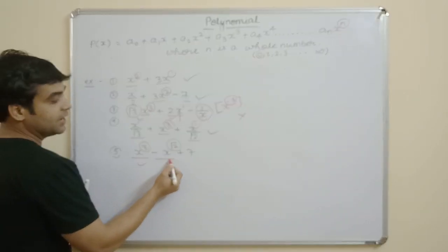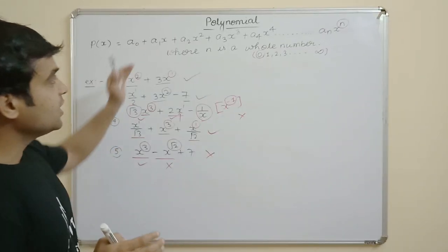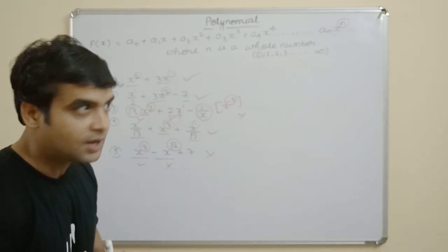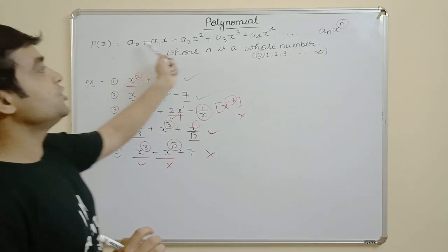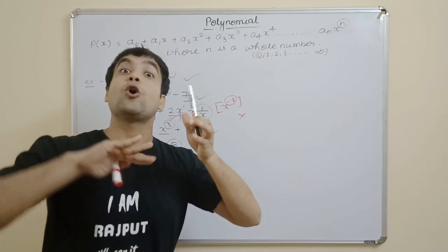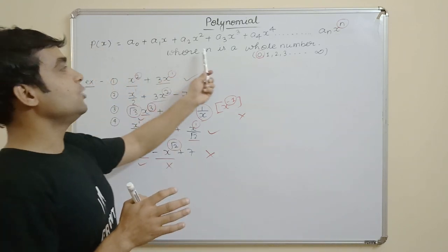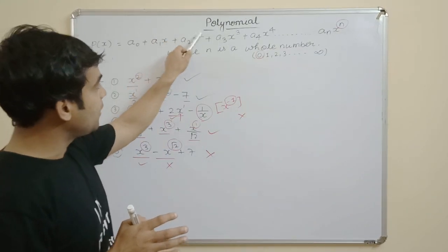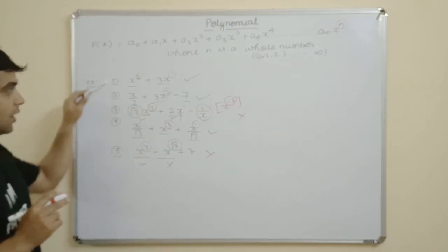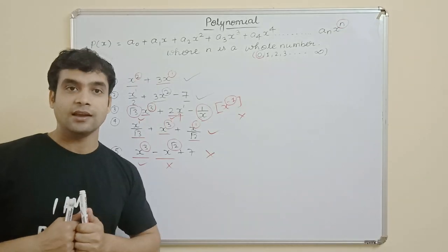Now I think the definition is clear. In the general equation, A0, A1, A2, A3, A4 are all coefficients — meaning the multiples of variables. The power n must be a whole number throughout the equation. The powers 1, 2, 3, 4 are all whole numbers. I have shown you which expressions are polynomials and which are not. I hope you understood.